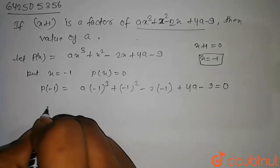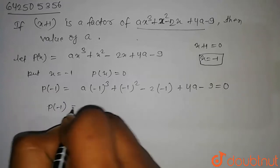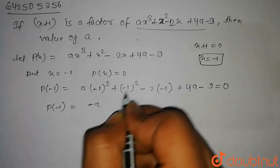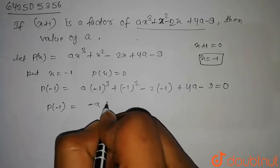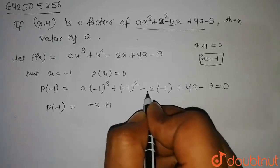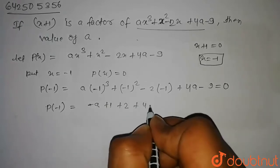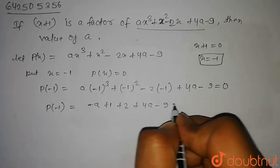So P of minus 1 will be equal to minus 1 to the power 3 will be minus a, and minus 1 to the whole square will be plus 1, and minus 2 into minus 1 will be plus 2 plus 4a minus 9 equal to 0.